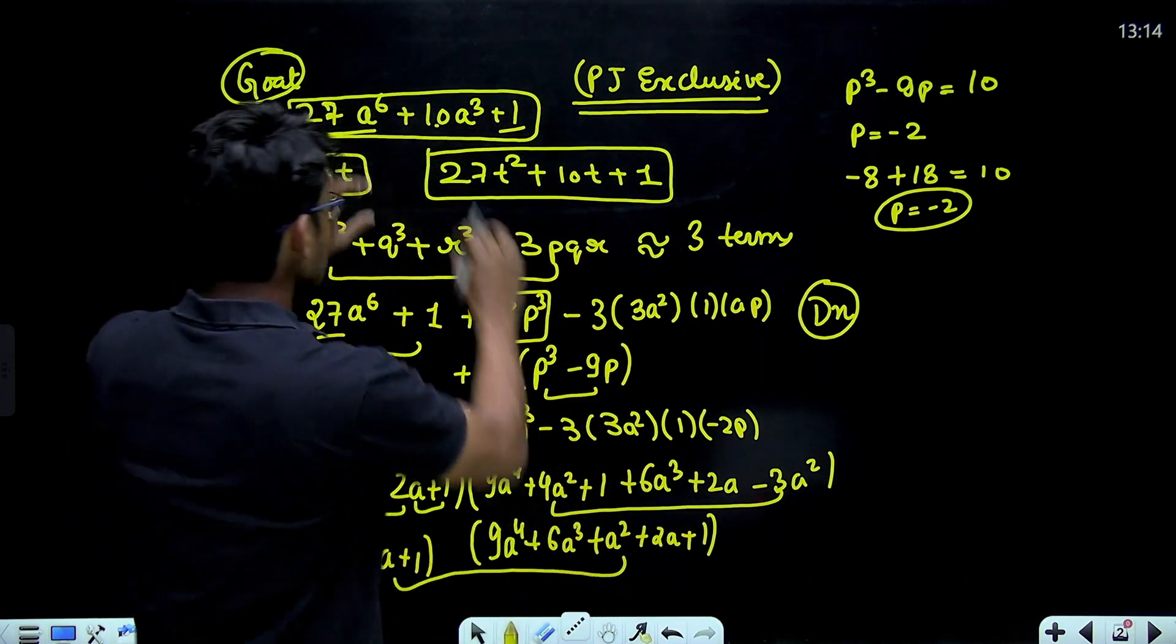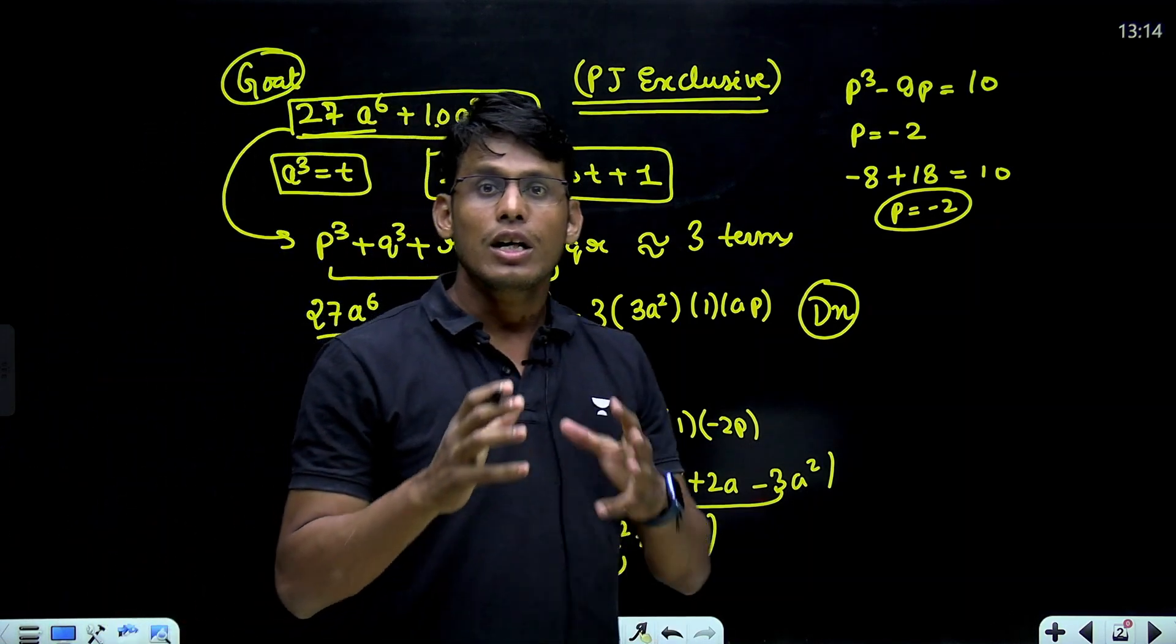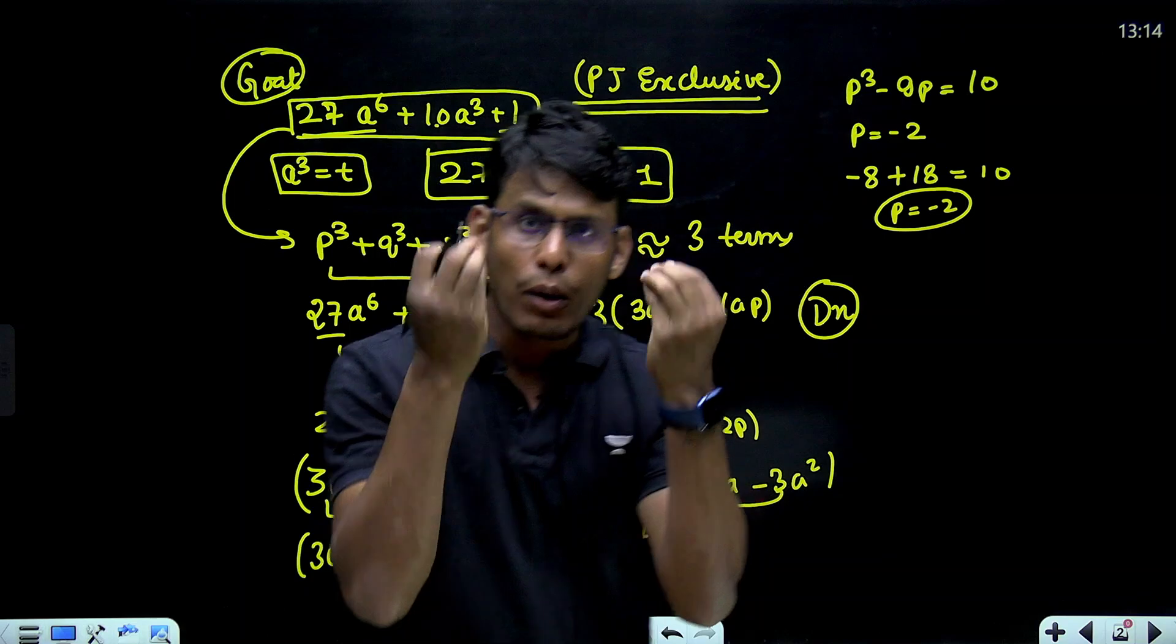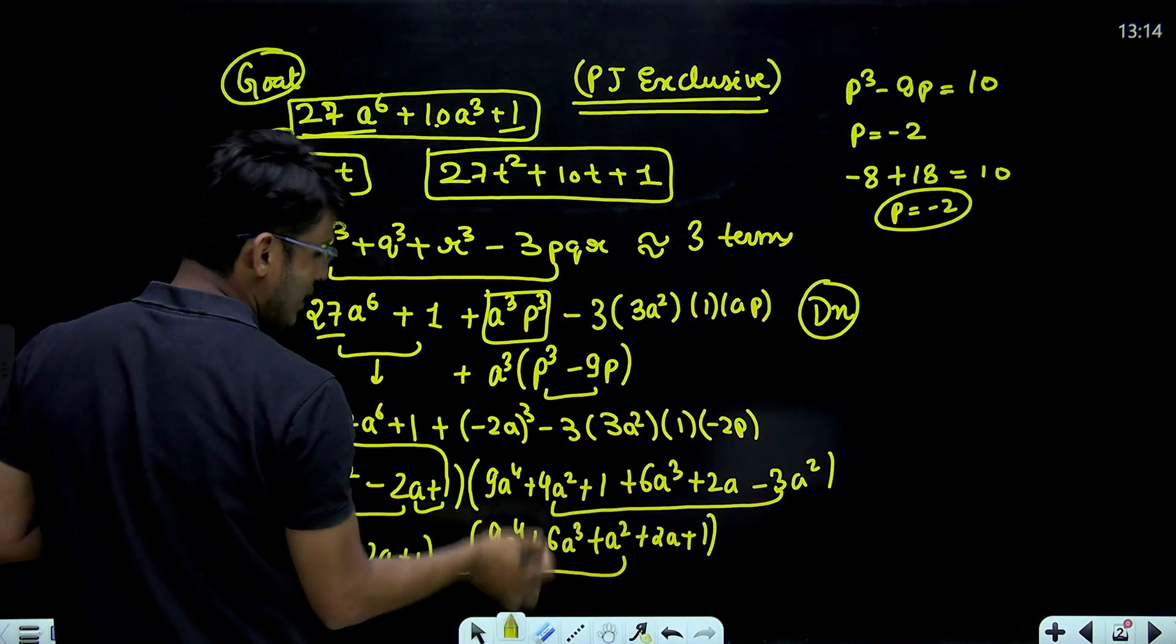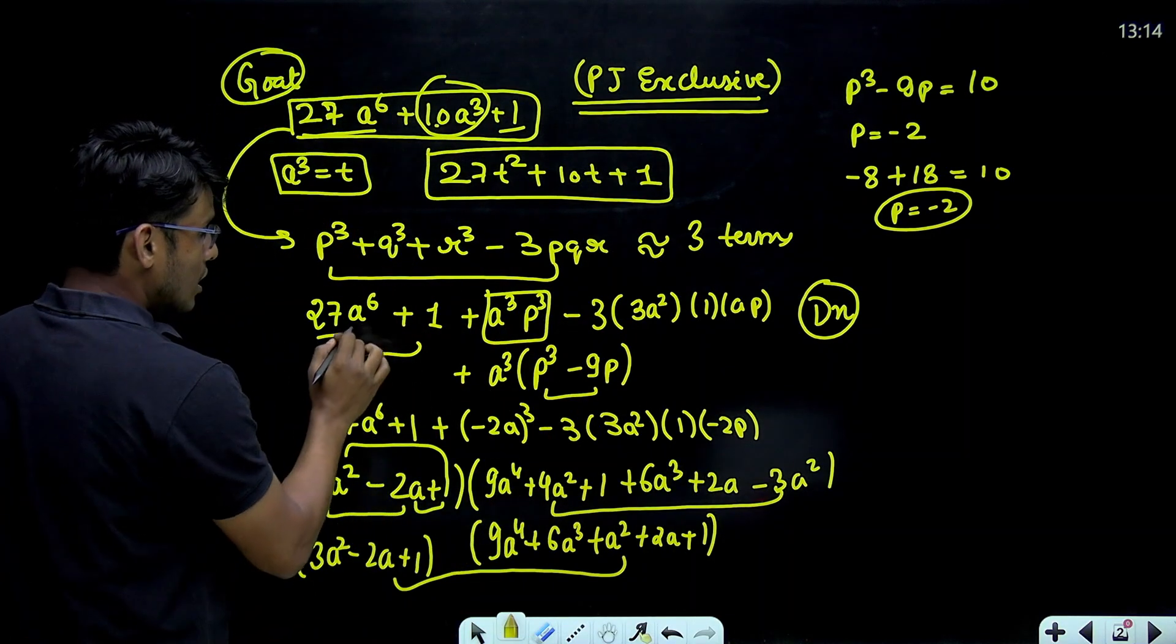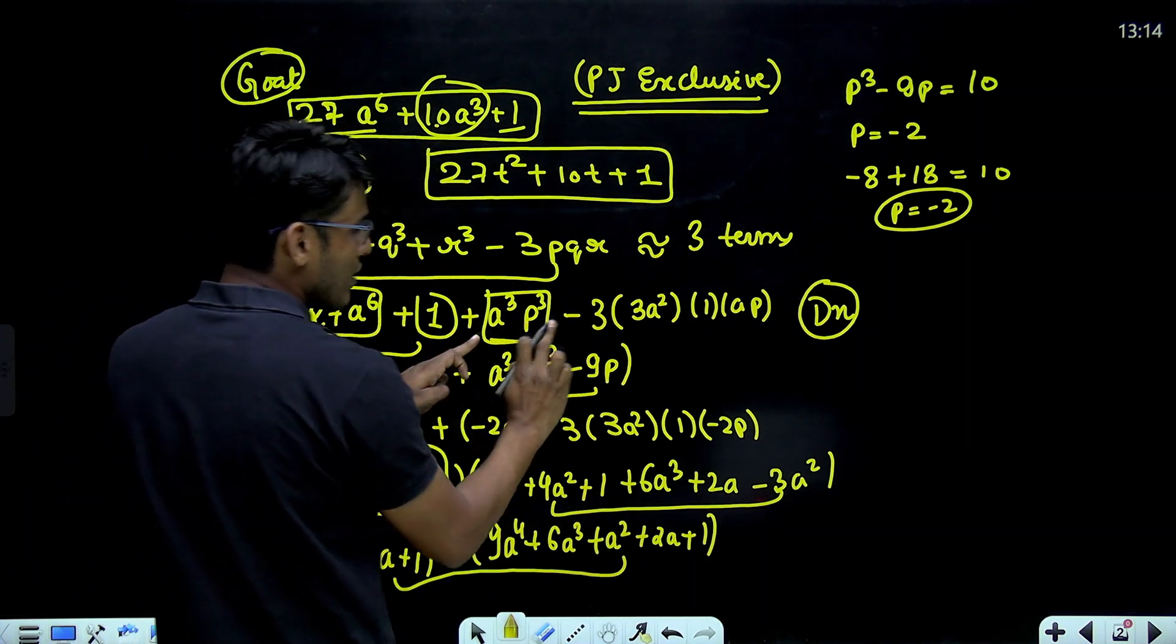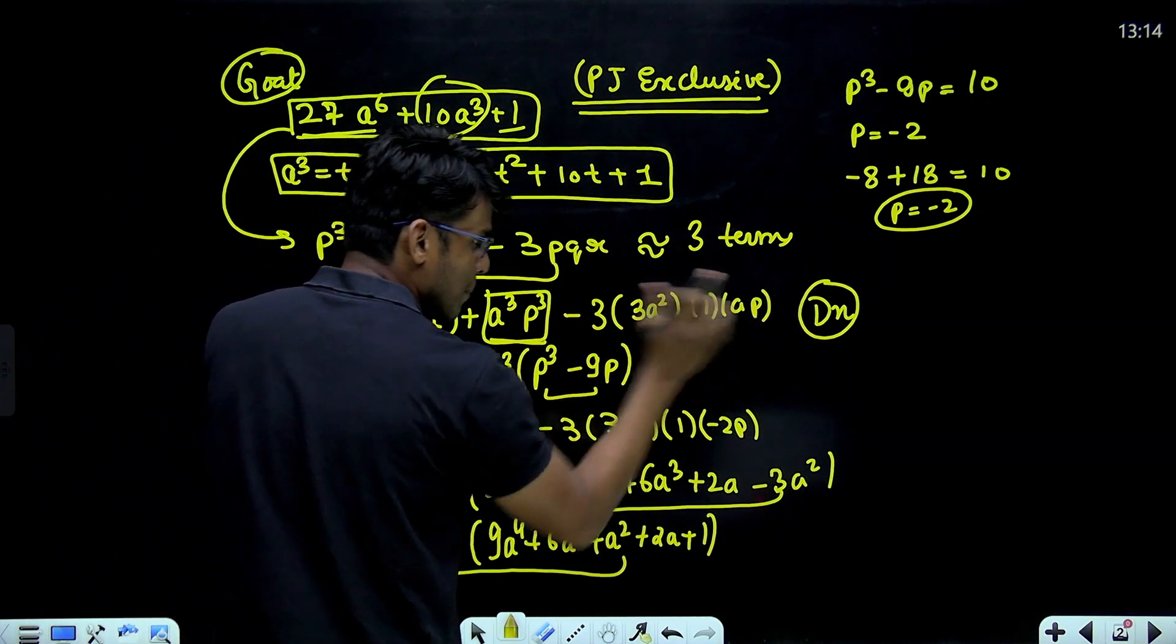We will use the mother of all identities that is p^3 plus q^3 plus r^3 minus 3pqr. But the problem here is that you have three terms and it requires four terms which means two terms are actually of same degree and they are getting added and subtracted. Our hunch is that it is this one because this is the only term which is not a perfect cube. What I have written here, this is a perfect cube, this is a perfect cube, I have added one perfect cube here and then I have written minus 3, 3a square from here, 1 from here and ap from here.